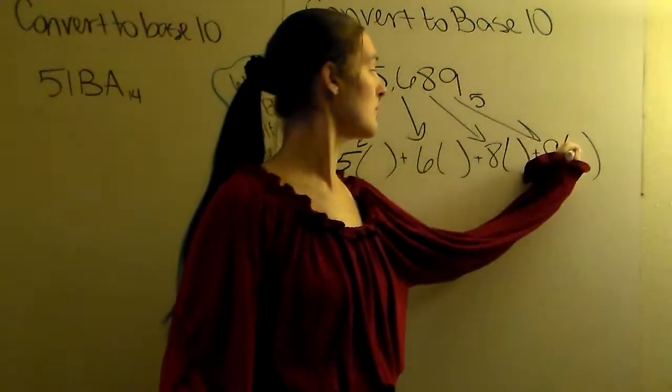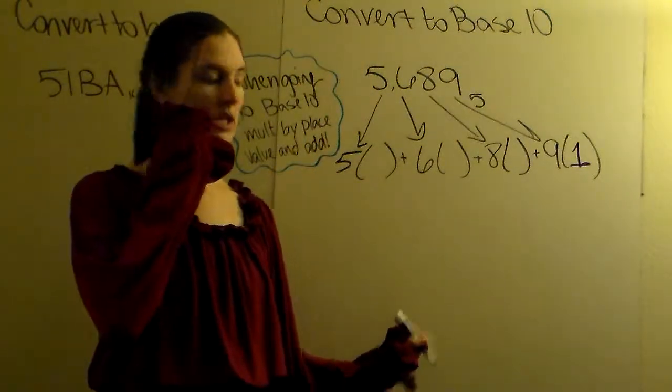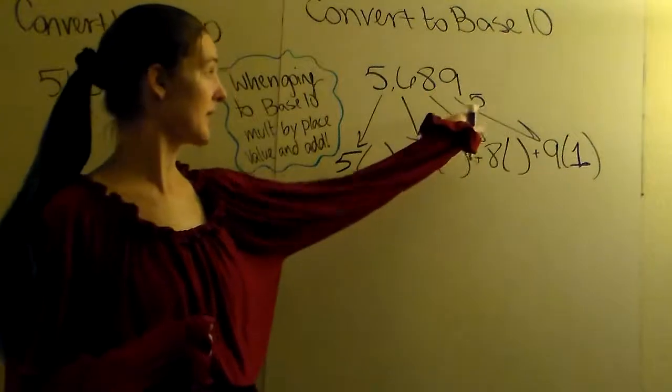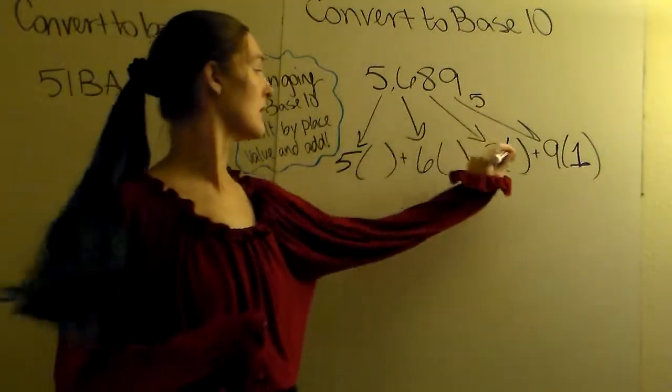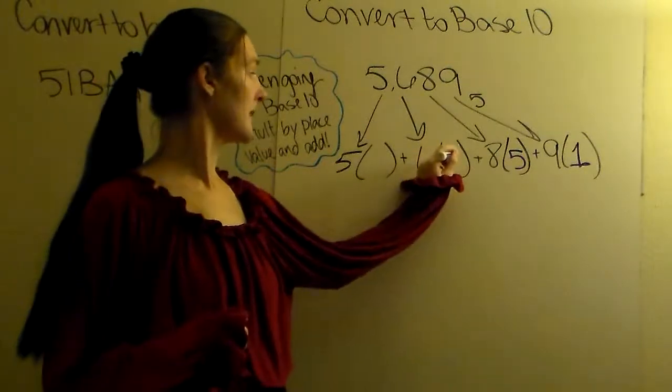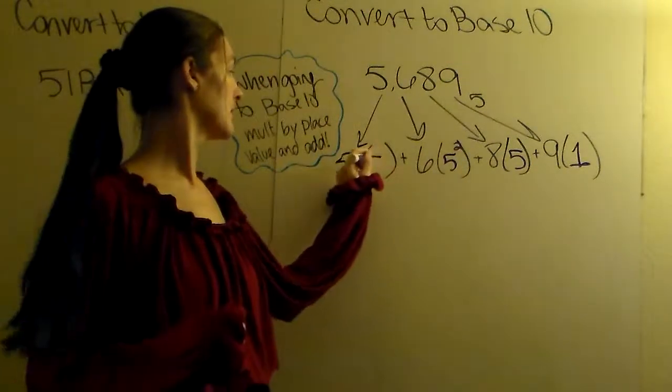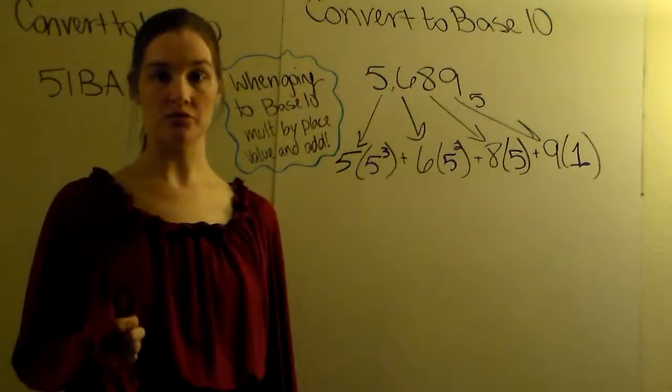So we always start with 1 on the farthest most right. The next place value is the base. What base are we in? We're in base 5. So you're going to write the base. Then you want the base squared. Then the base cubed.